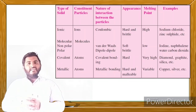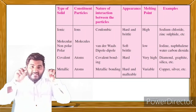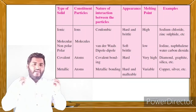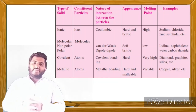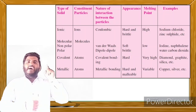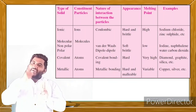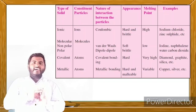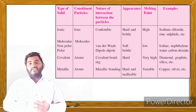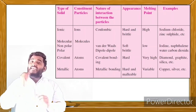Fourth, metallic solids — the constituent particles are also atoms. In metallic solids, metallic bonding is present between atoms. They are very hard and malleable in nature and have a variable melting point and boiling point. Examples include copper, silver, zinc, silicon, and iron.